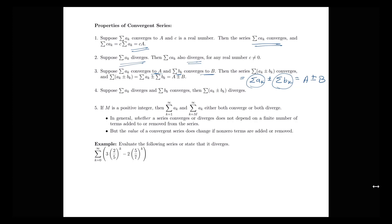We have to be more careful in the case that those two series diverge. We do have a case where if one sum is diverging and the second sum is converging, then the combined sum will actually diverge. But notice that we haven't said anything about what happens if both the sum of ak and the sum of Bk diverge — the sum of ak plus or minus Bk may actually converge or diverge.